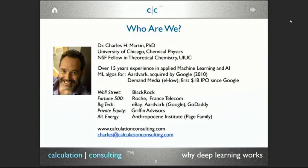I'll just give a little introduction. I'm Charles Martin. I did my PhD at the University of Chicago in chemical physics and I was a National Science Foundation fellow at Champaign-Urbana. I run a boutique consulting firm in San Francisco, California, where we do machine learning and AI data science. I've been doing this for over 20 years. I've worked for a number of firms: BlackRock, Roche, eBay, Aardvark, which was acquired by Google. I also help support the Anthropocene Institute.